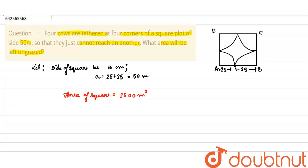Now we need to find out the region that will be left ungrazed. So this is the region which will be left ungrazed. So what we will do is we will first find out the area of the quadrant. Area of the quadrant inside the square.